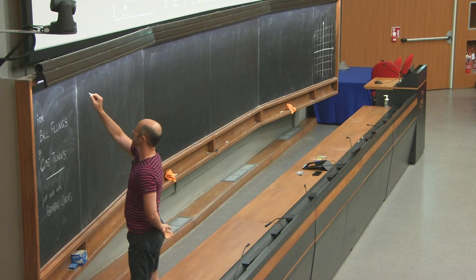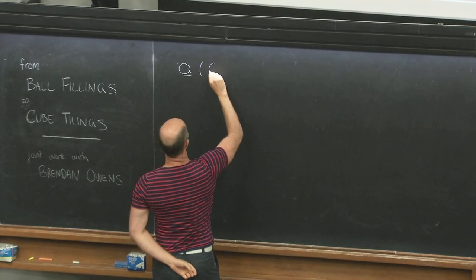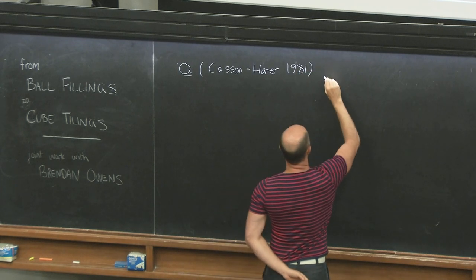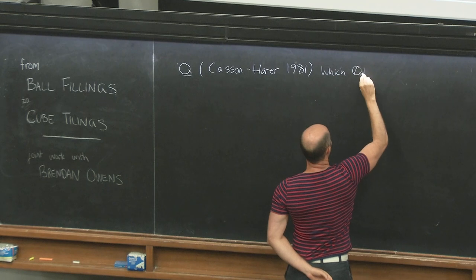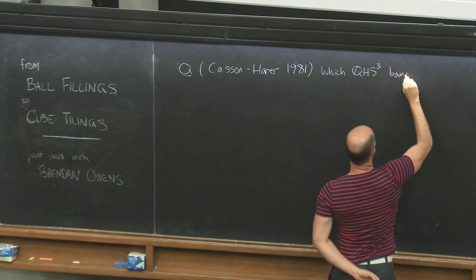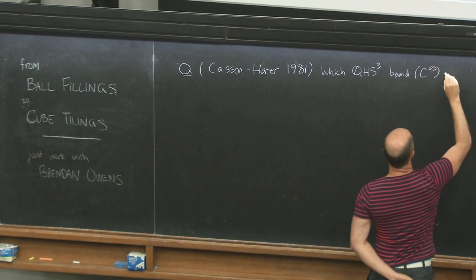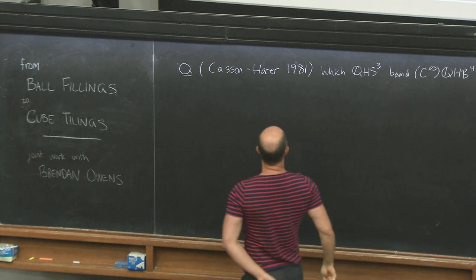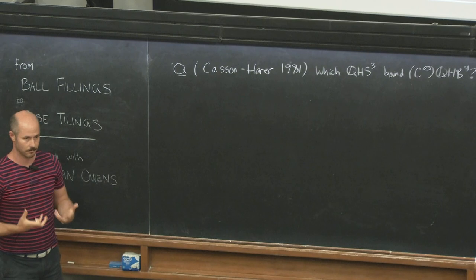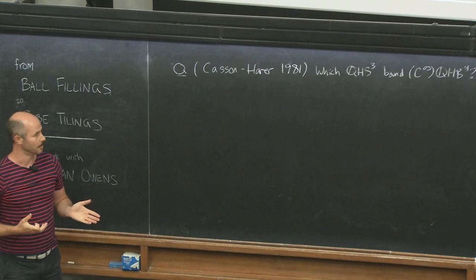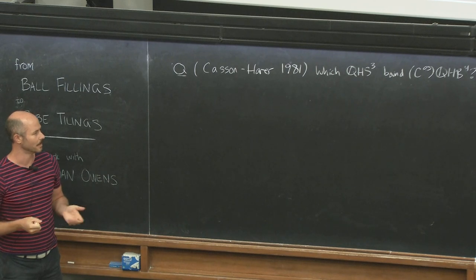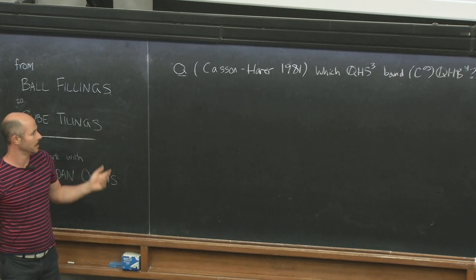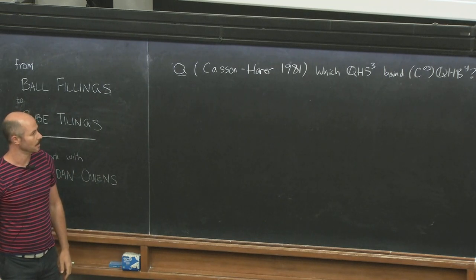The question I'll begin with is a well-known open-ended problem posed by Casson and Herrer, I believe from '81, and the question is which rational homology spheres bound smooth rational homology four balls? It's pretty open-ended. Direction is usually given to this problem by focusing on a special class of three-manifolds and attempting to answer the problem within that class.